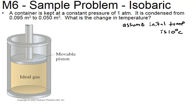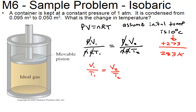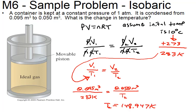Using the ideal gas law — gas state before equals gas state afterwards — with everything staying the same except volume and temperature, and converting to Kelvin, the final temperature comes out to 148.947 K. Therefore the change in temperature is 134.05 K.